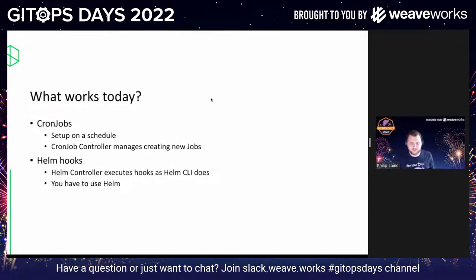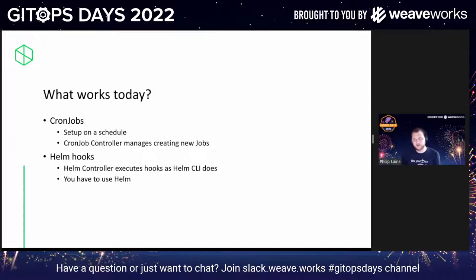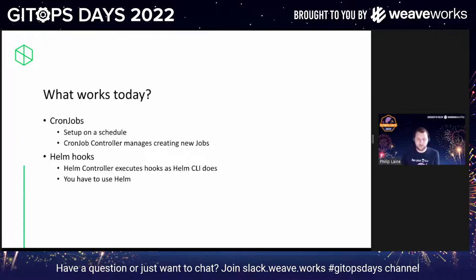The types of jobs that have worked with Flux since forever are cron jobs — the Kubernetes cron job controller creates a job matching the schedule, which works fine. Another option with the Helm controller is Helm hooks, which seems to be the go-to solution for developers wanting pre-deploy or post-deploy hooks while using Flux. The Helm controller fully supports defining resources like a job or pod that are created at different lifecycle stages of a Helm chart deployment.